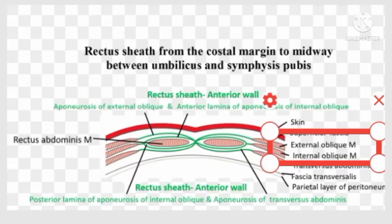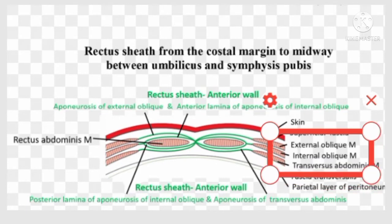The anterior wall of the rectus sheath between the costal margin and the arcuate line is formed by the external oblique aponeurosis and the anterior lamina of the aponeurosis of the internal oblique muscle, as you can see in the figure. The posterior wall between the costal margin and the arcuate line is formed by the posterior lamina of the aponeurosis of the internal oblique muscle and the aponeurosis of the transversus abdominis muscle. As you can see in the figure, this is the external oblique muscle, internal oblique muscle, and transversus abdominis muscle.